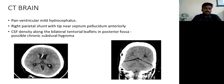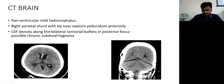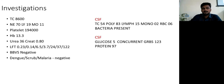Emergency CT brain was done in the ED, which showed panventricular mild hydrocephalus, right parietal shunt with tip near the septum pellucidum, and CSF density along bilateral tentorial leaflets as an incidental finding on the right side. Chronic subdural hematoma with hydrocephalus was also noted. Initial investigations showed total counts of 8600 with neutrophils of 70%, platelets of 94, RFT and LFT were normal, and peripheral blood smear was negative.